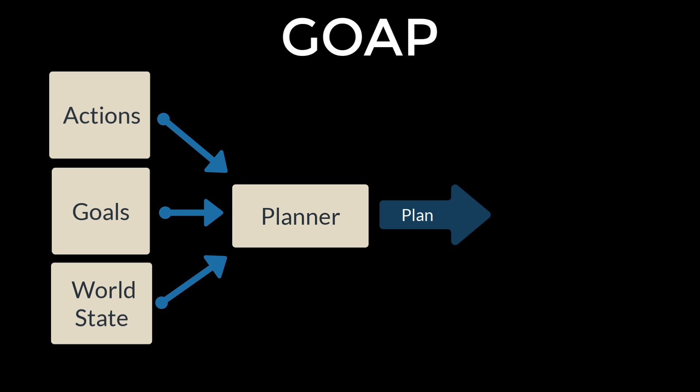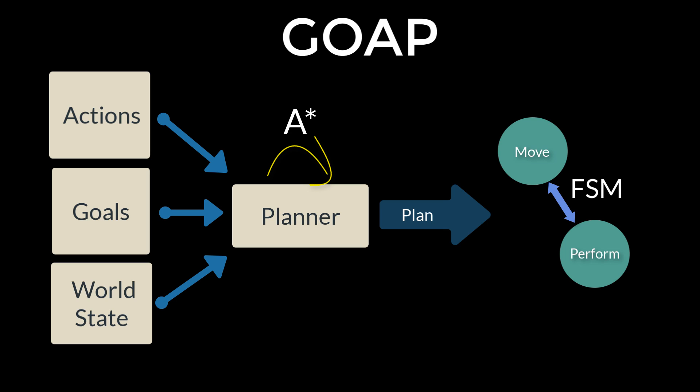A conceptualisation of a GOAP system looks like this, with actions, goals and world states being fed into a planner. The planner chains the actions together according to the goals and starting states to determine which plans are achievable. The planner uses the A* algorithm to find the best plan using the cost values. Once a plan has been generated, the agent goes about achieving it using a very simple finite state machine that moves the agent to where the action needs to take place and then performs the action. The agent works its way along the chain of actions until a goal has been achieved. Before each action is performed, it is always checked to see if it is still valid — if not, the entire plan is discarded and another one is generated.